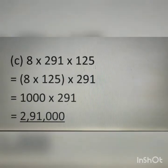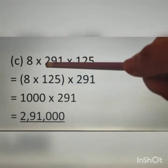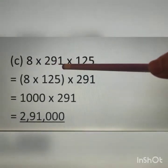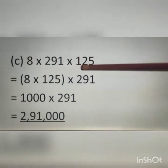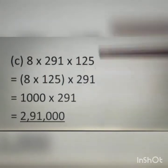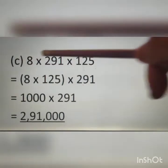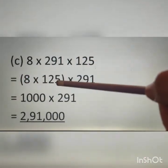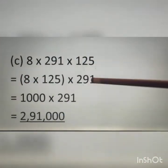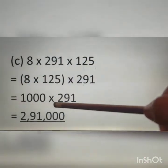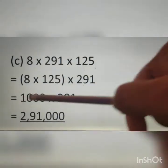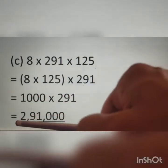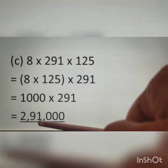Question C: 8 multiplied by 291 multiplied by 125. I rearrange 8 and 125 together. 8 multiplied by 125 equals 1000, multiplied by 291. Therefore, 1000 multiplied by 291 equals 2,91,000.